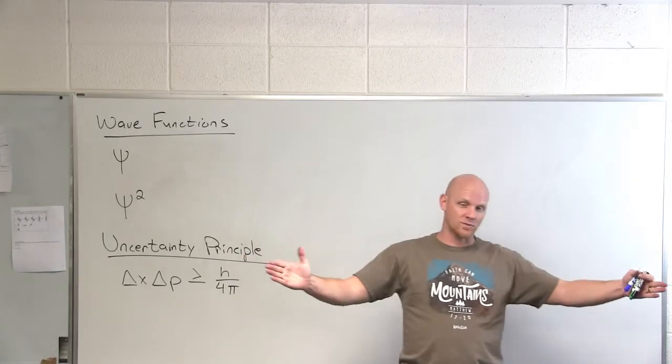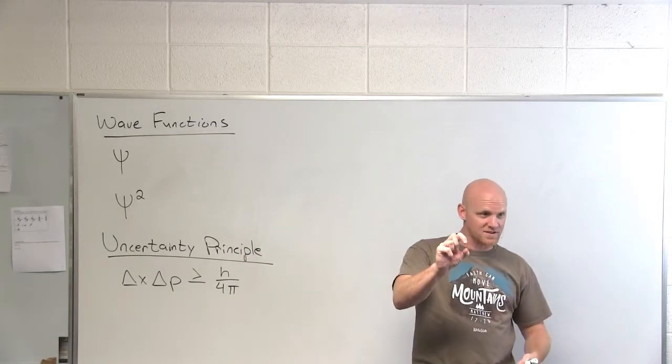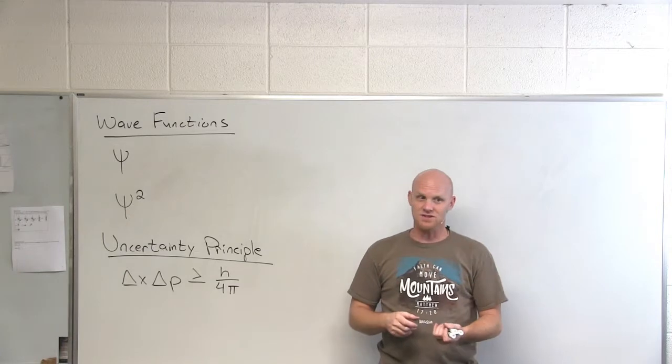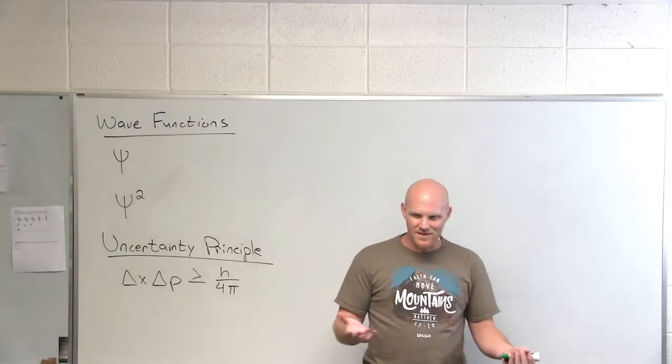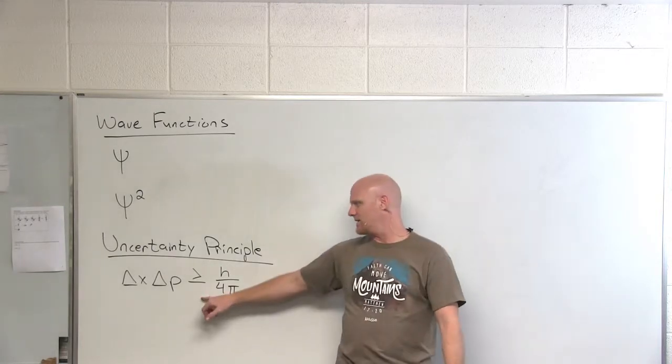But if I use a really short wavelength, then I get a really more precise idea of where the location is. But it might have imparted a lot more momentum to the electron, so I have less of an idea of where it's going. So this is kind of the problem the thought experiment kind of played with.